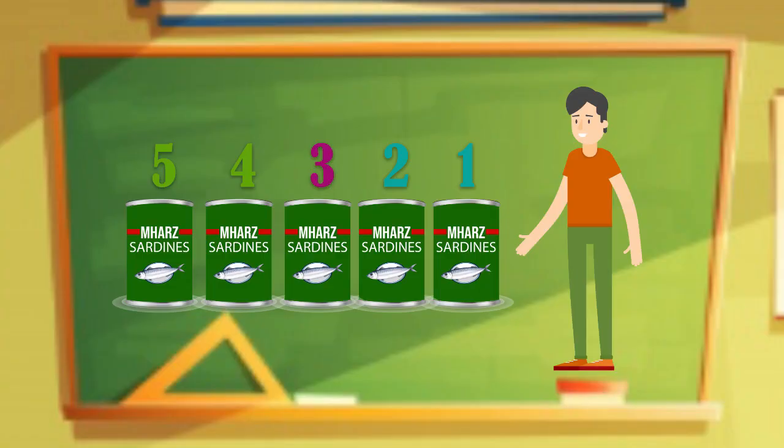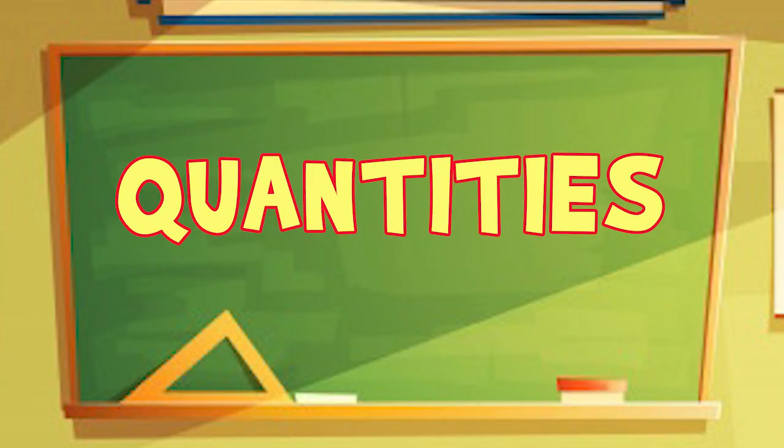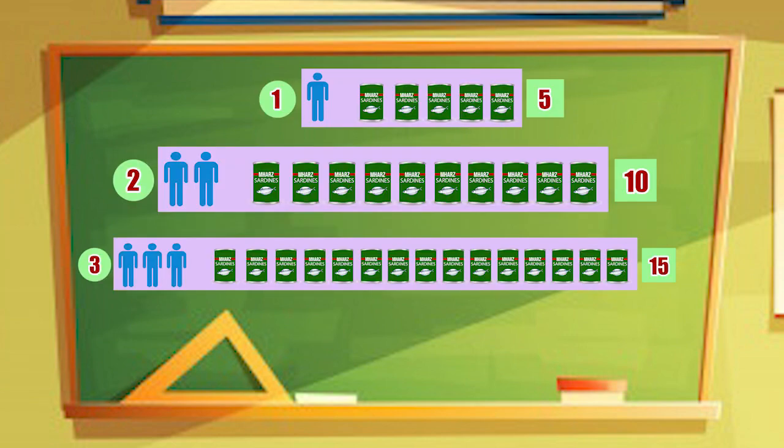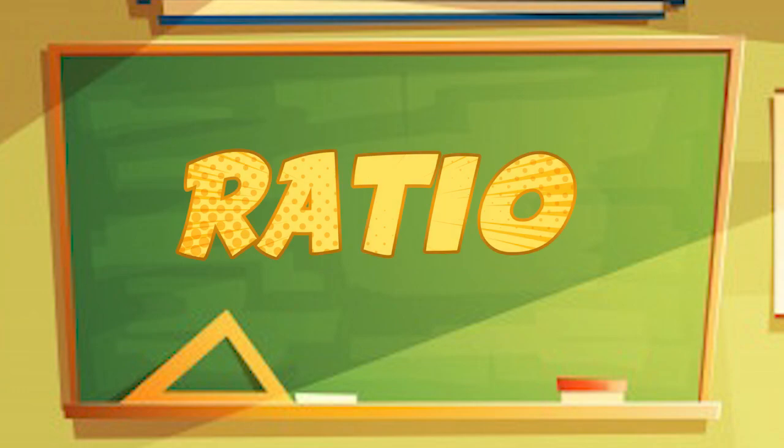One person receives five cans of sardines. In here, we compare quantities. What are these quantities? That's right, the number of persons and the number of cans of sardines. The comparison of these two quantities is what we call ratio.